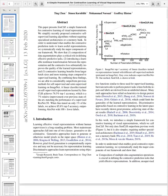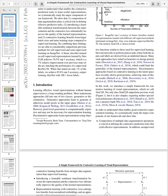Learning effective visual representations without human supervision is a long-standing problem. The mainstream approaches fall into two classes: generative or discriminative. Generative approaches learn to generate or model pixels in input space, which can be computationally expensive and may not be necessary for representation learning. Discriminative approaches learn representations using objective functions similar to supervised learning but train on pretext tasks derived from unlabeled data. Discriminative approaches based on contrastive learning in the latent space have recently shown great promise.